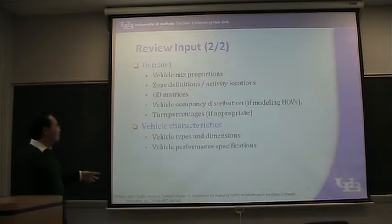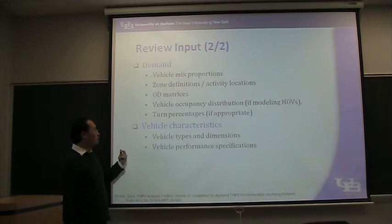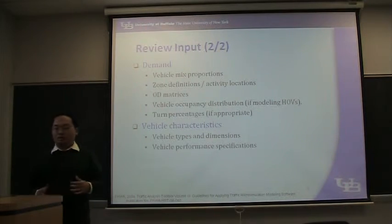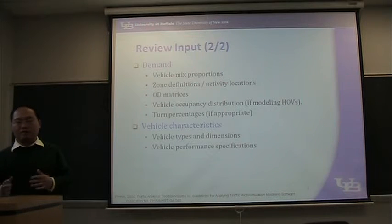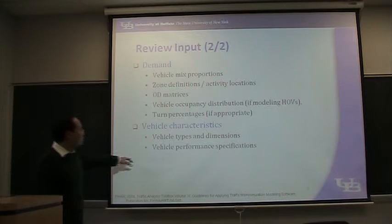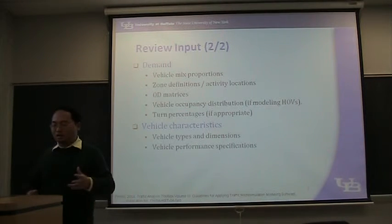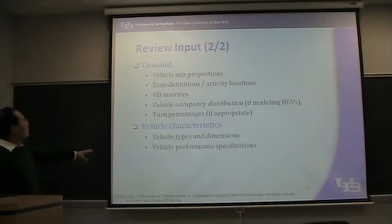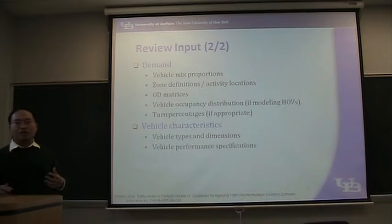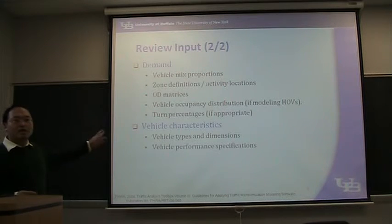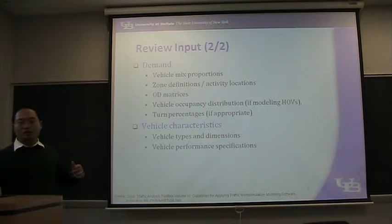After checking demand, check the vehicle characteristics including vehicle types and dimensions. Make sure each vehicle has a correct length and that vehicle types are correct. Also check performance specifications like horsepower, acceleration, deceleration, and so on. This is the full list of things to check. Before calibrating your model, make sure all these items have been checked and generate a report.